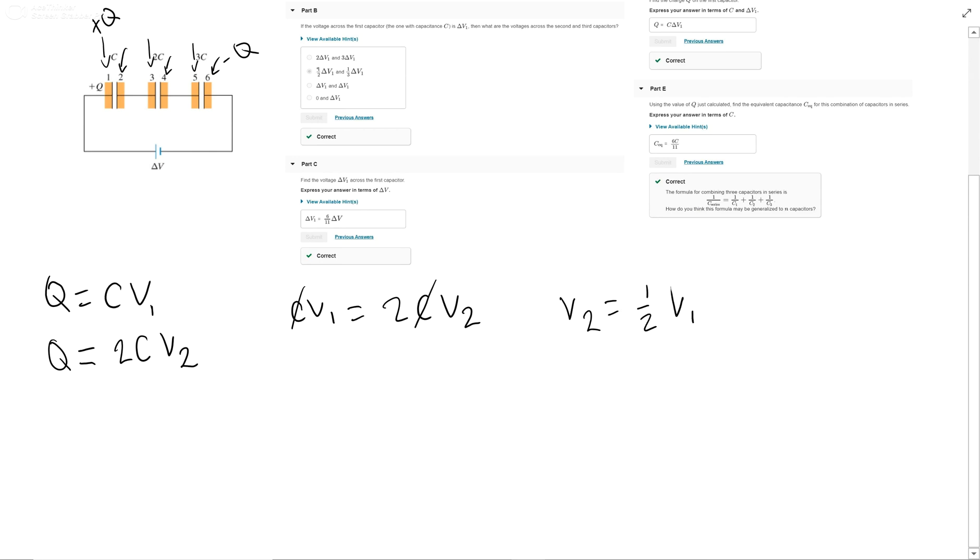And if you do the math, the exact same thing, CV1 equals 3CV3 equals 1 third V1. To do the exact same thing for part B.